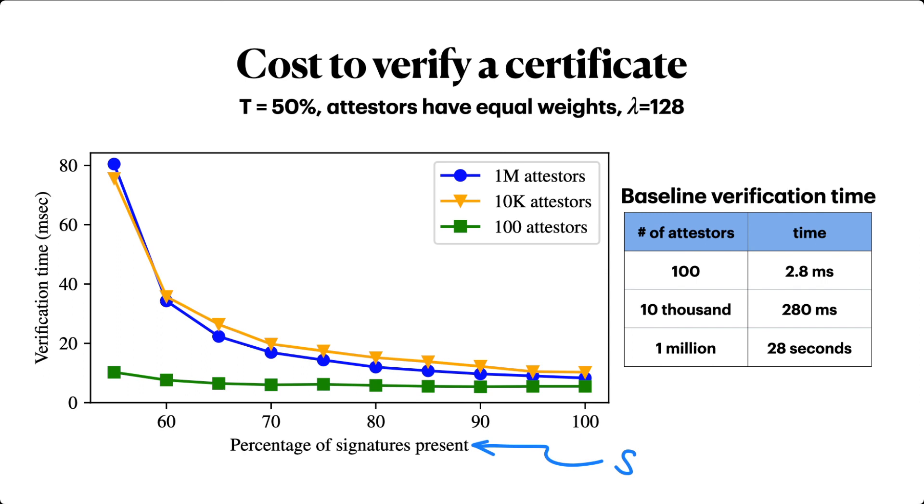In the second experiment I'll mention, we look at certificate verification time, fixing the target weight at 50 percent and varying the number of attesters from 100 to 1 million, and the total signed weight from 55 to 100 percent.